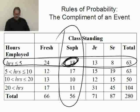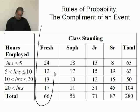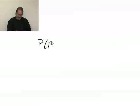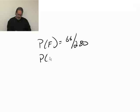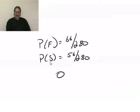Let's talk about probabilities. Looking at freshmen and sophomores — those are mutually exclusive. The probability that you observe somebody as a freshman is 66 out of 280. The probability you observe a sophomore is 56 out of 280. Now, if you observe a freshman, what is the probability that you also observe a sophomore? That's going to be zero. If you observe a sophomore, what's the probability that you also observe a freshman? That is also zero.